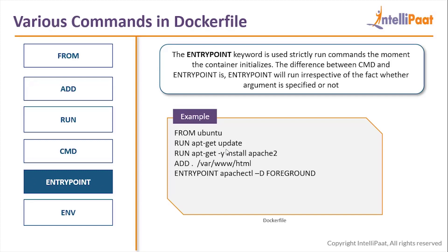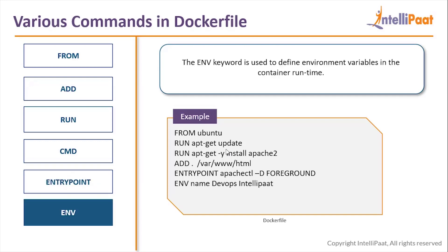The next command is ENV. If there are any environment variables you want to set inside a container, you can pass them using the ENV command followed by the variable name and its value. For example, I specified a variable called 'name' with the value 'intellipath'. These are the main commands you can use to create a Dockerfile.